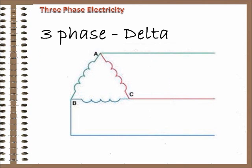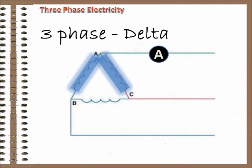However, in this configuration, each line out has two phases connected to it. So, the current in that line is a combination of the current in the two phases. Again, not double because of the difference in rotation, but more than in one.